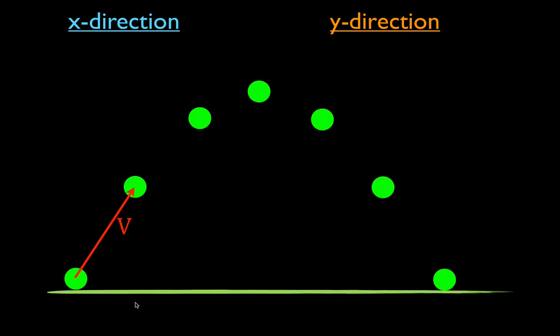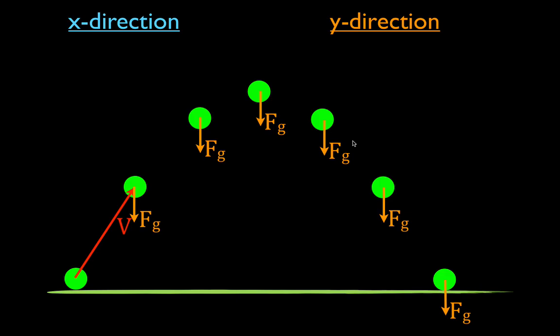Before we do that, we have to talk about the forces, because it's the forces that cause the change in motion. Obviously, this object is not moving in a straight line, so its velocity is changing. Changes in velocity are caused by unbalanced forces. As this object travels through the air, there's only one force acting on it at each point in time, and that is the force of gravity, acting in the negative y direction.